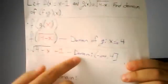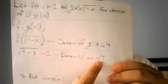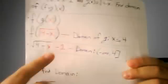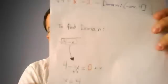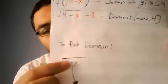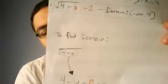Now the domain of this would be negative infinity comma 4. And the reason for that is when you set this equal to 0.